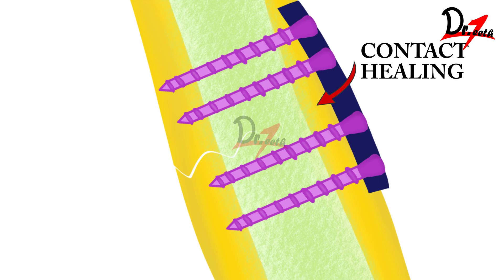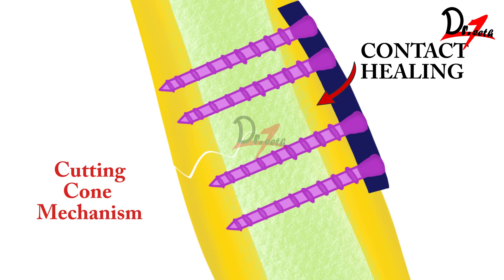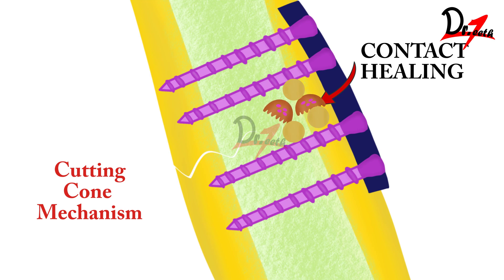Contact healing happens in areas where the gap is almost zero. Here, vessels and cells cannot grow because there is no gap. So a special process called the cutting cone mechanism occurs. Osteoclasts first reach the fracture site and cut away bone, creating little pathways where blood vessels can grow and osteoblast proliferation can happen so that new bone can be made. Osteoclasts cut away a small portion of bone to create a pathway for osteoblasts to form new bone.